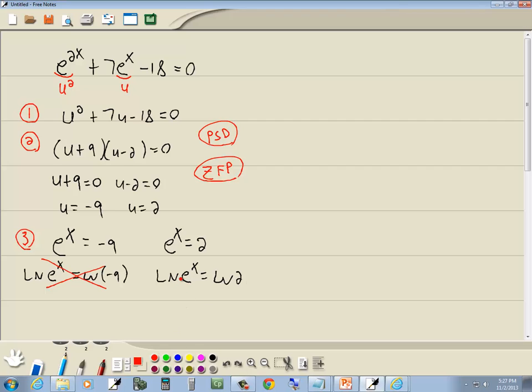Now step three is to use properties of the log to get the variable out of the exponent. Remember, if you have natural log, that's base e. And if these match the numbers here, then the ln and the e's will cancel. And we're left with just the exponent, which in this case is x. And so we've already solved for x, so x equals natural log of 2 is our answer.